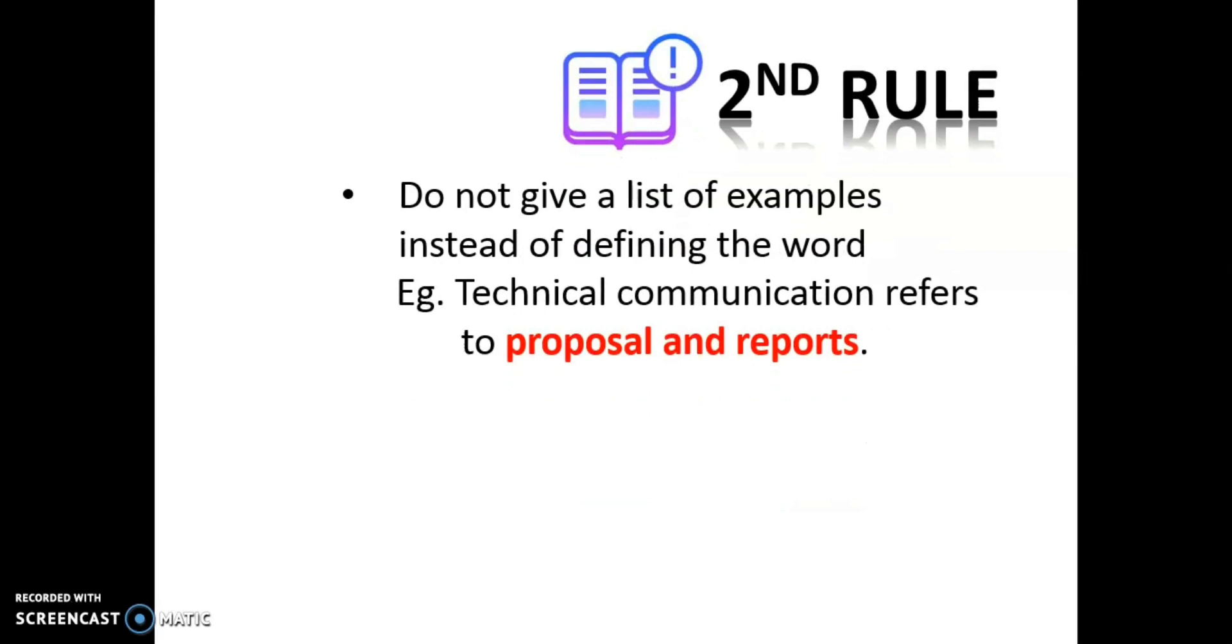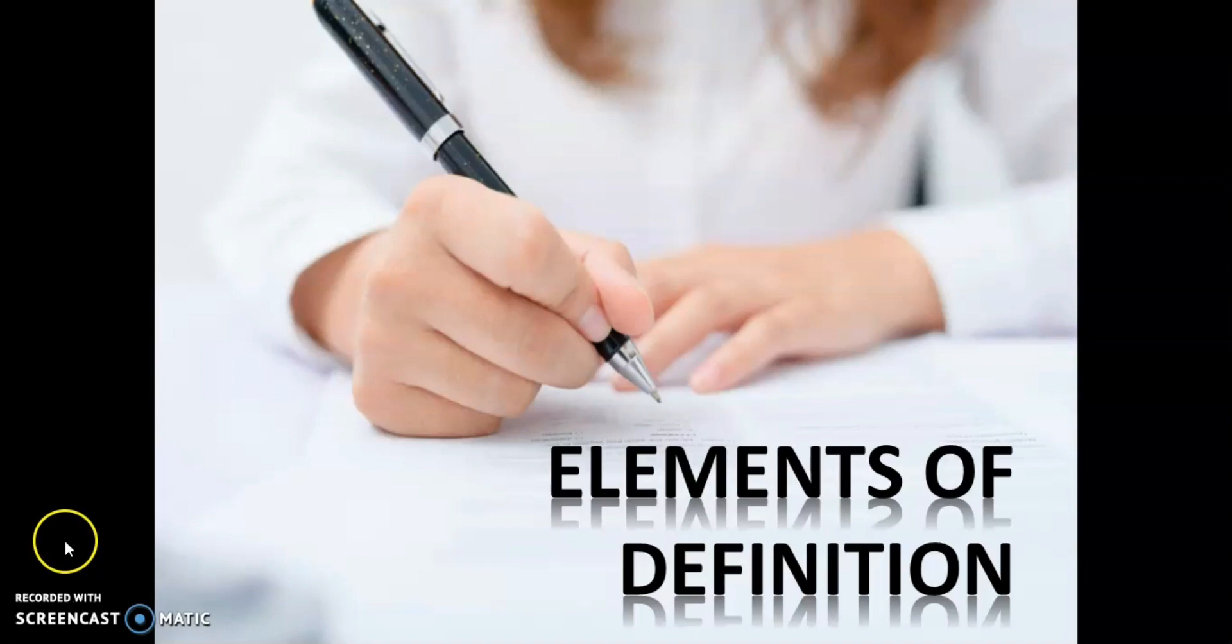How about the second rule? Do not give a list of examples instead of defining the word. For instance, technical communication refers to proposal and reports. Instead of defining what is the meaning of technical communication, the author is giving the examples of technical documents, namely proposal and report.